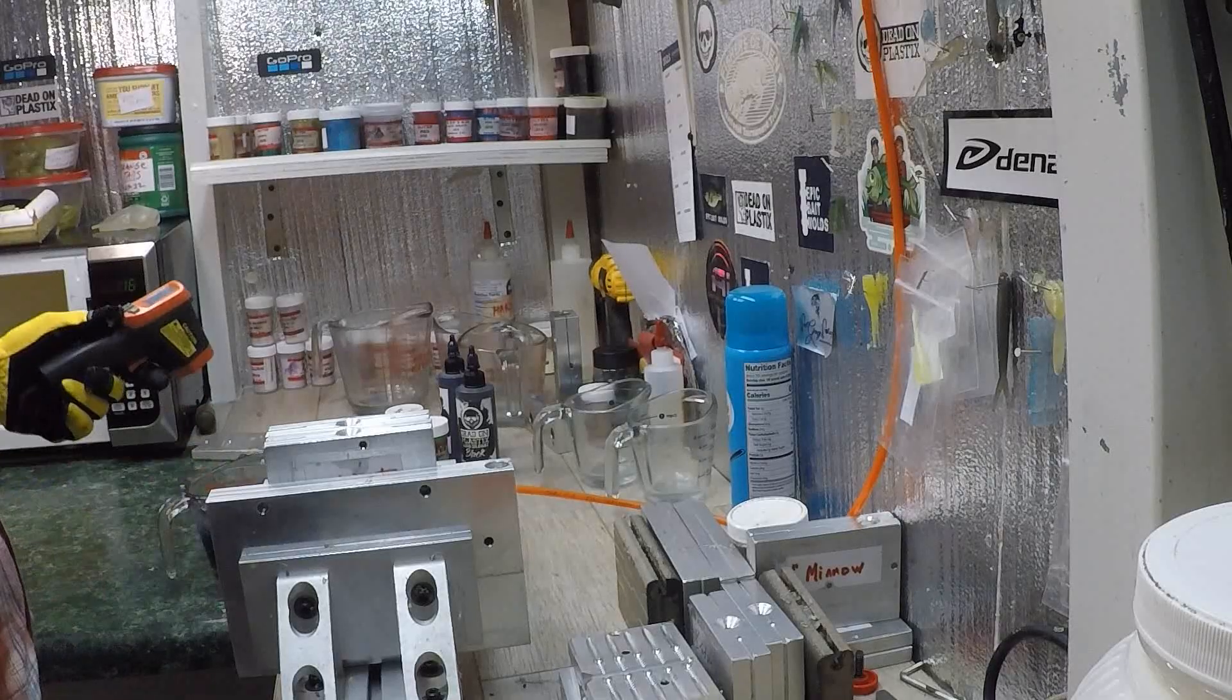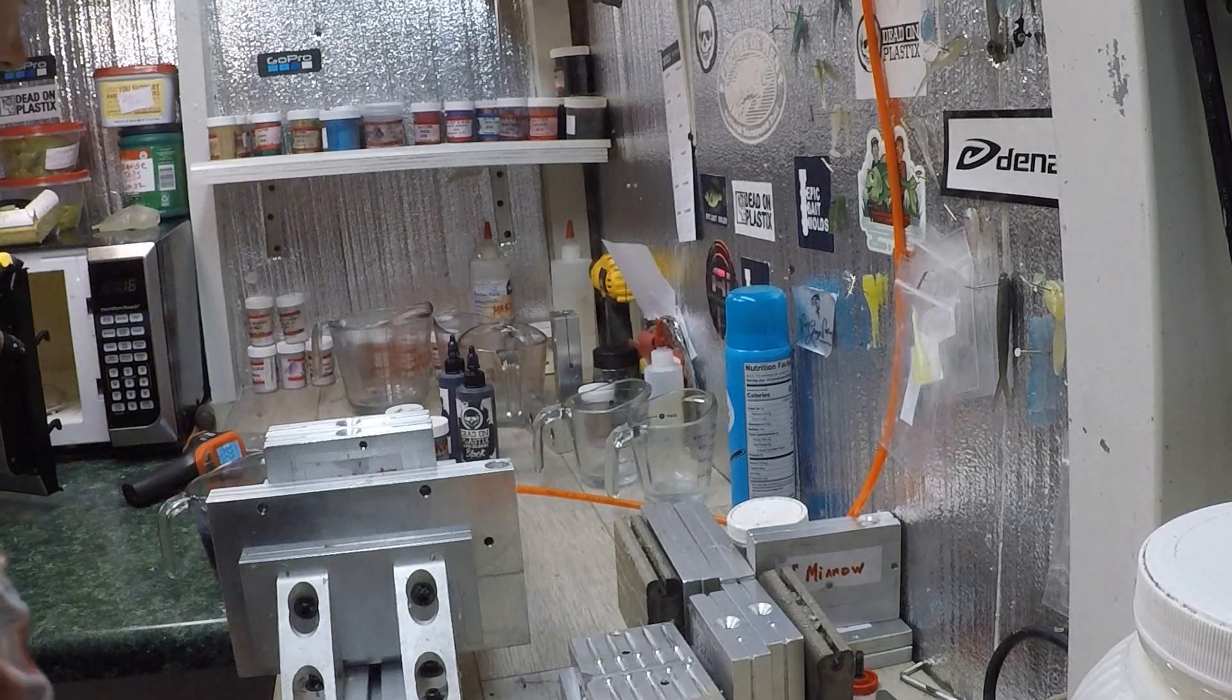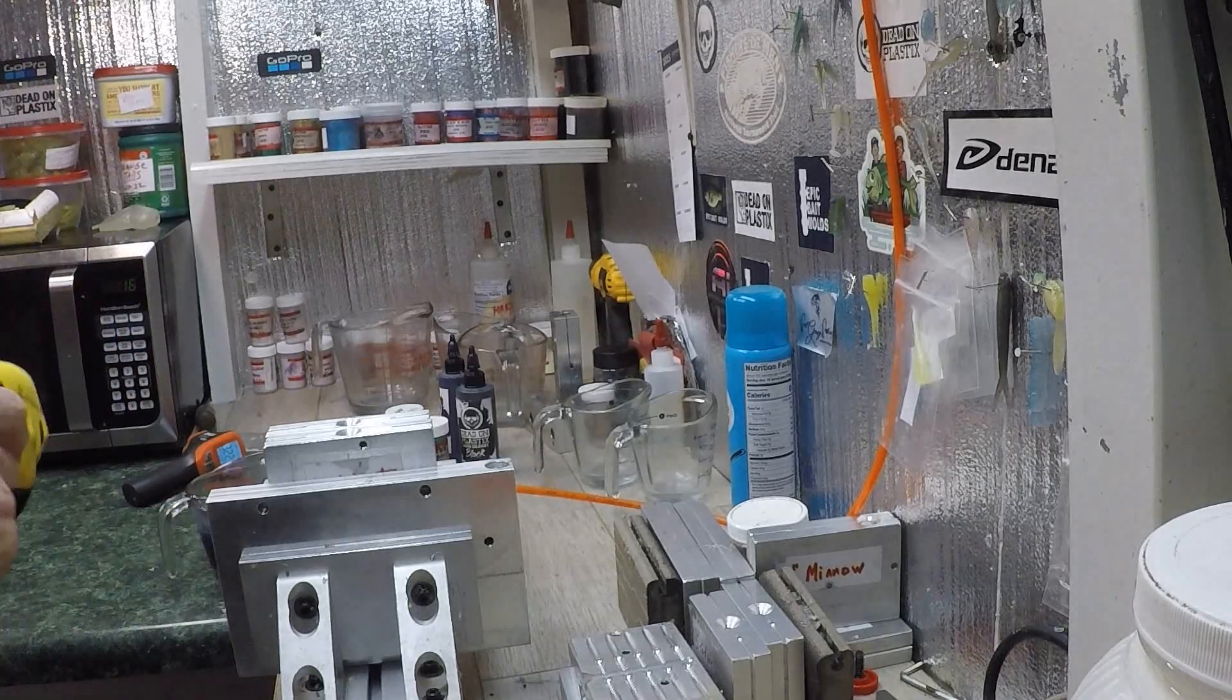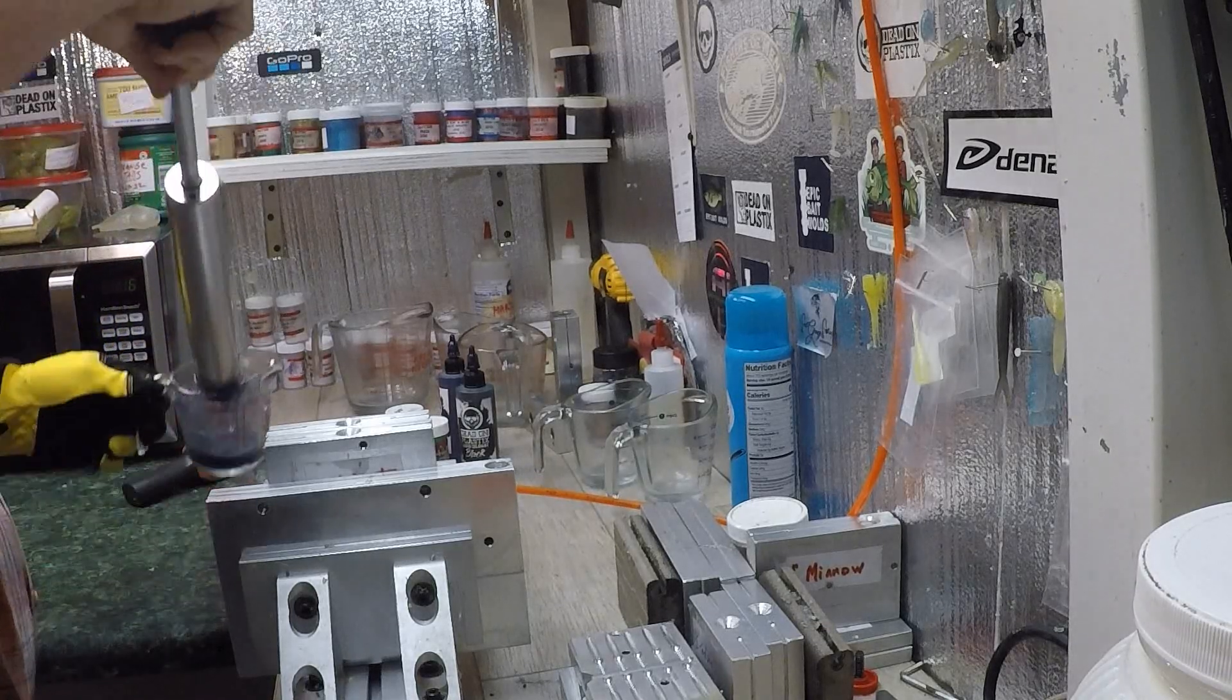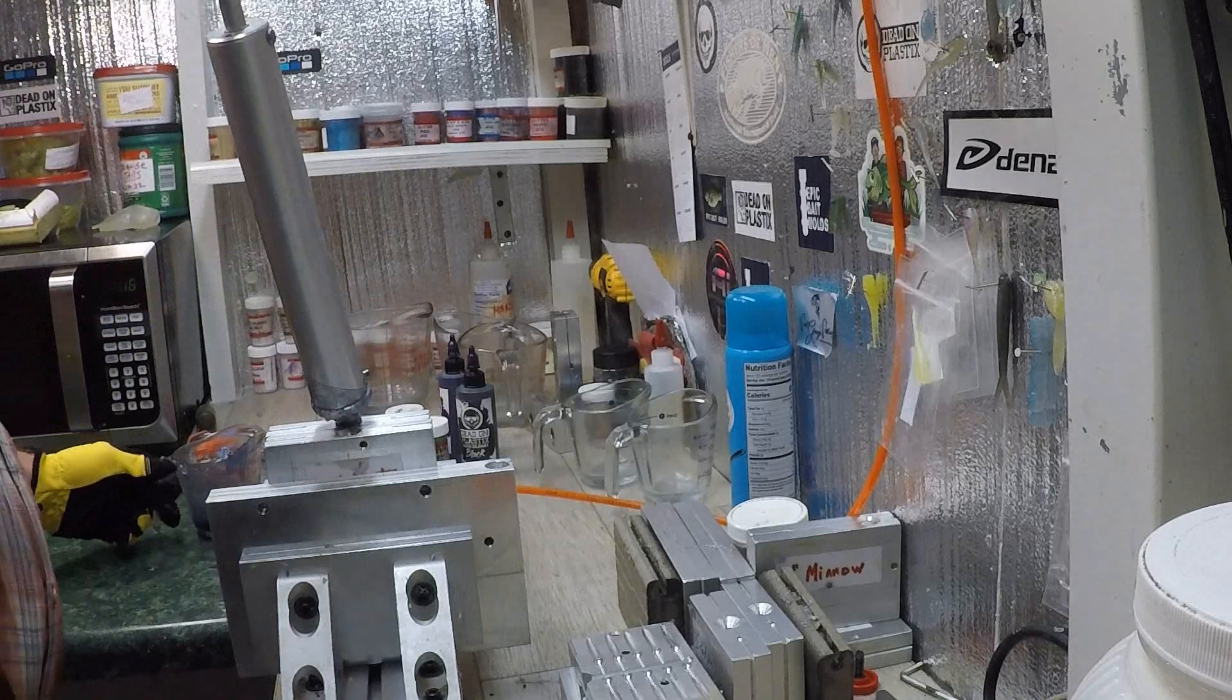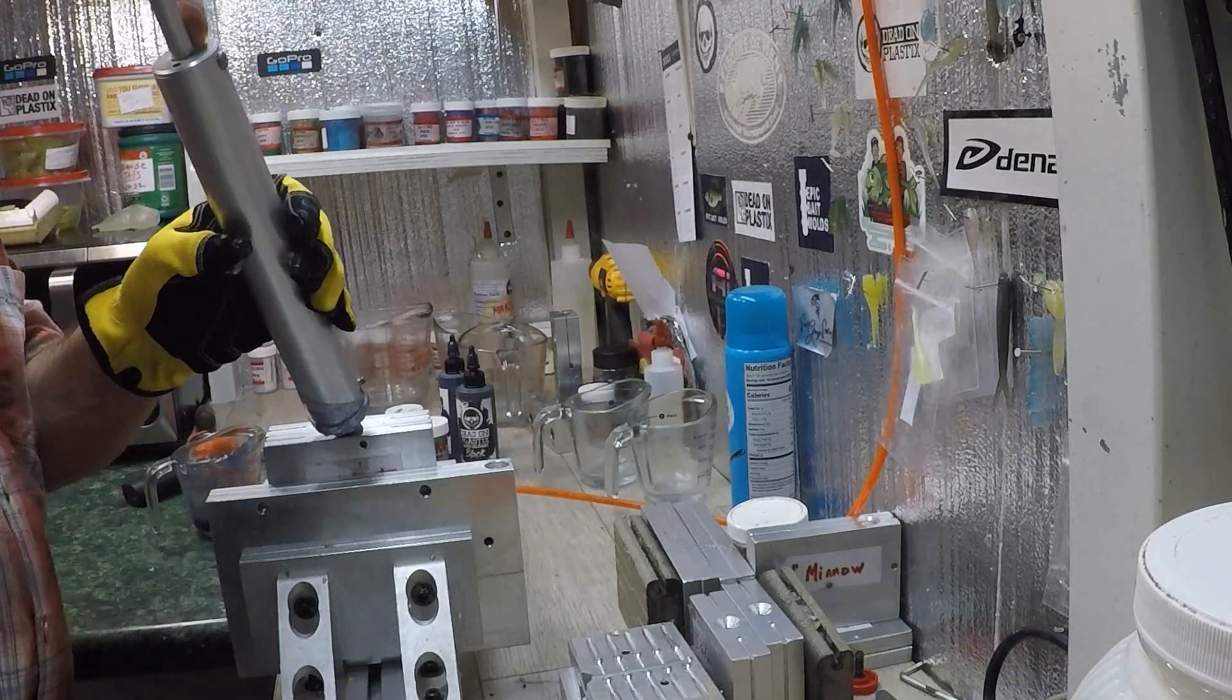All right guys, hate to back up. Let's get a shot here real fast. We gotta keep this around 330 to 335 to get the little tails to fill out. You got these little tails and little legs on the cricket.